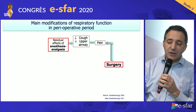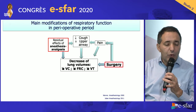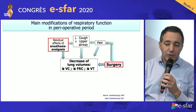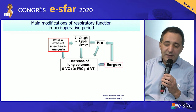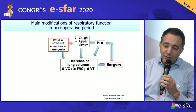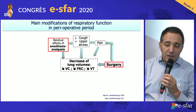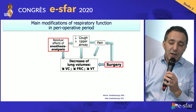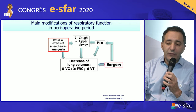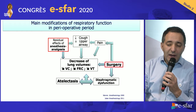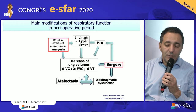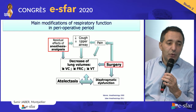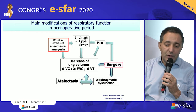The main modification is the so-called restrictive syndrome. What the restrictive syndrome means is a decrease of all the lung volumes — mainly the vital capacity, the functional residual capacity, and the tidal volume. This restrictive syndrome leads to diaphragm dysfunction with atelectasis. This is a vicious circle: more atelectasis leads to more diaphragm dysfunction, which leads to further decrease in lung volume.